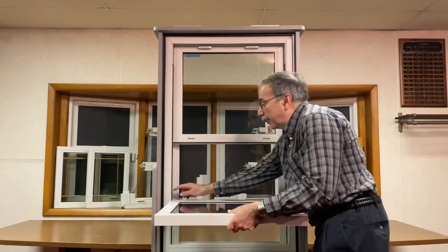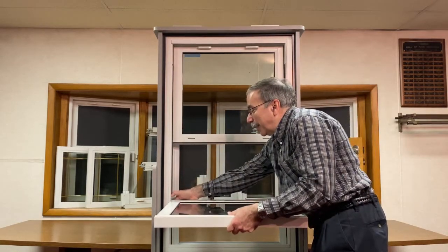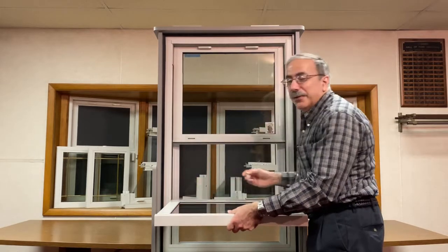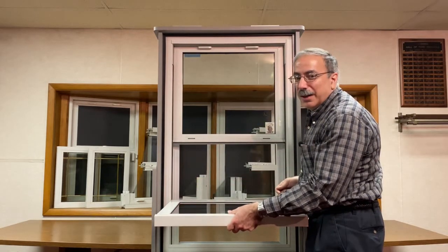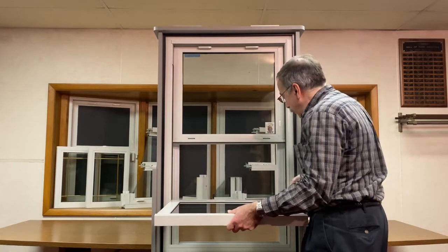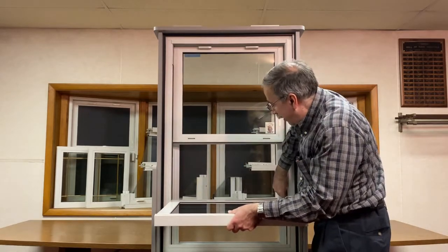Then you're going to remove the tamper locks that will be found above the balance shoe and double hung pivot bar on both the left and right side of the window.